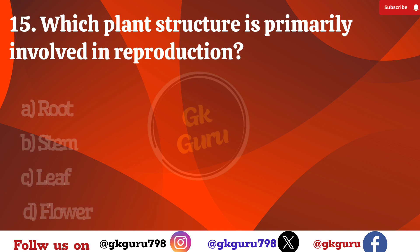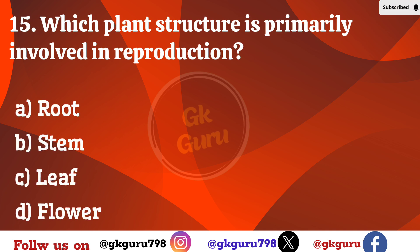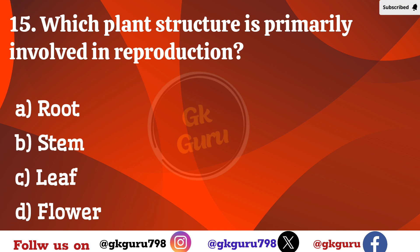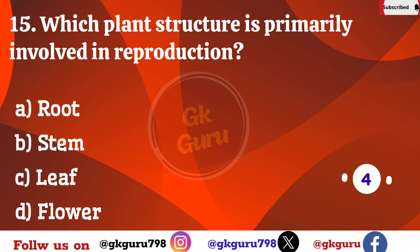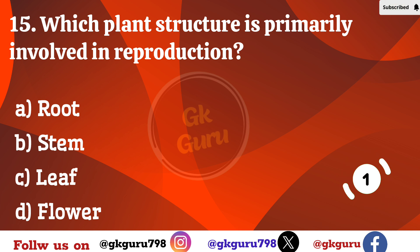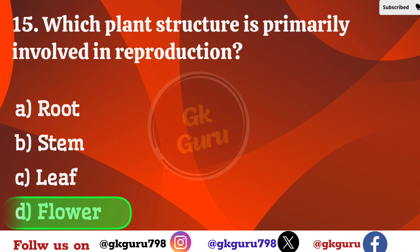15th question: Which plant structure is primarily involved in reproduction? Option A: root. Option B: stem. Option C: leaf. Option D: flower. Correct answer: Option D, flower.